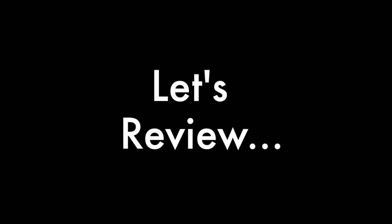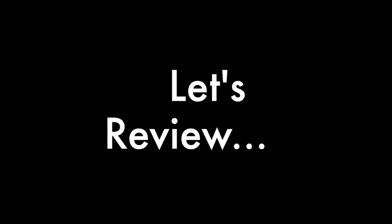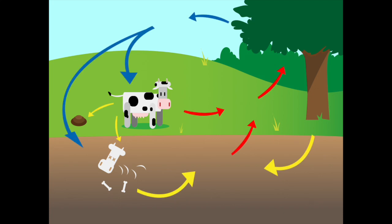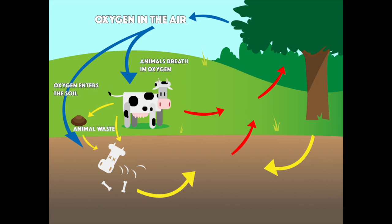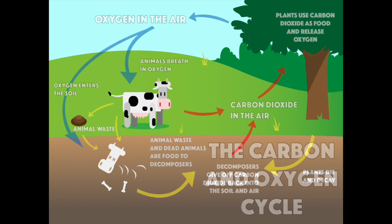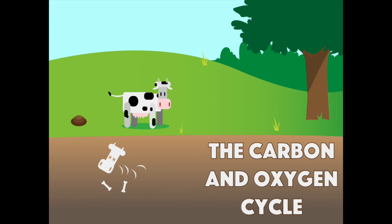Now let's review. Here is a simplified explanation of the process. Plants give off oxygen. Animals take in oxygen. Animals give off carbon dioxide. Plants take in carbon dioxide. This is the carbon and oxygen cycle.